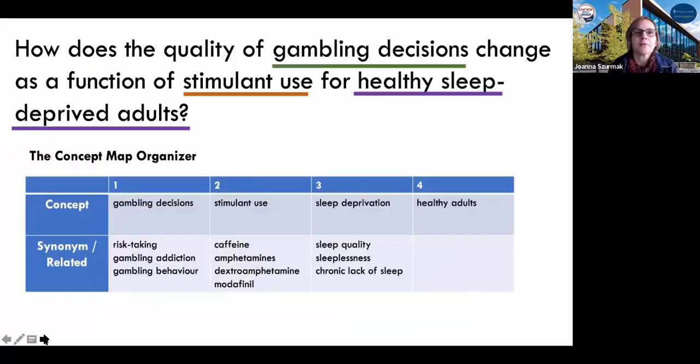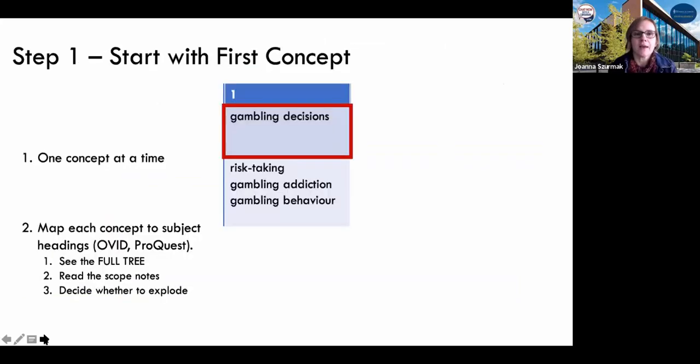So this example here follows this question. How does the quality of gambling decisions change as a function of stimulant use for healthy, sleep deprived adults? So we've got our concept map organizer, and we see our four concepts that we have, the gambling decisions, the stimulant use, sleep deprivation, and healthy adults. Let's start mapping them. So we start with the first one, with gambling decisions.